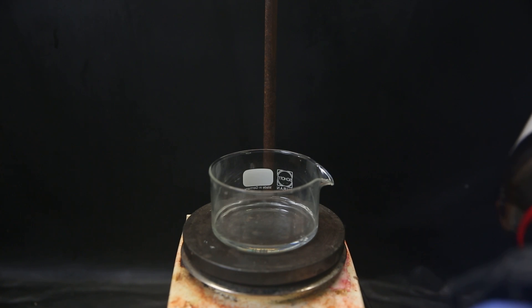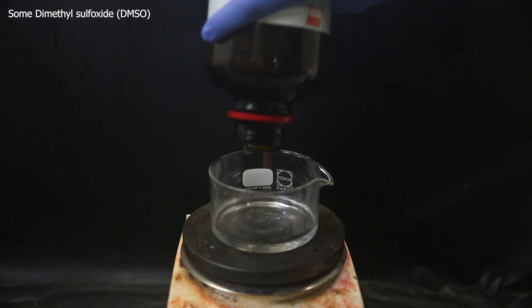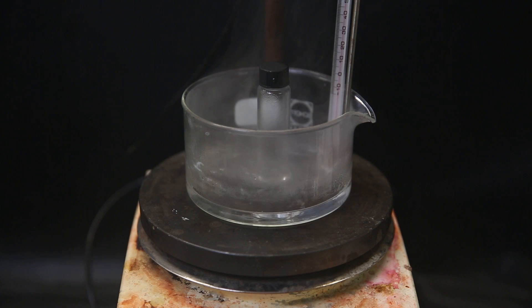The melting point is supposed to be 144 to 147°C. So I fill a small dish with some solvent that has a higher boiling point, which is dimethyl sulfoxide. I then put the temperature probe into the liquid and start heating it.